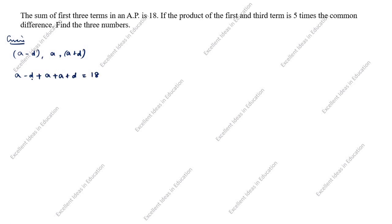Minus D and plus D cancel out. So we have 1A plus 1A plus 1A. So 3A is equal to 18. A is equal to 18 divided by 3, which is equal to 6. So A is equal to 6.